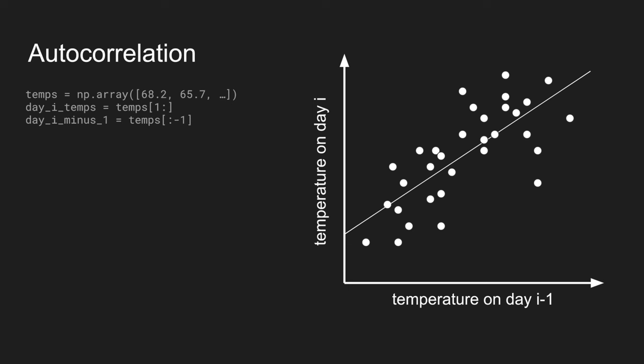So, this correlating a time series with itself, with some amount of shift, is what autocorrelation is.